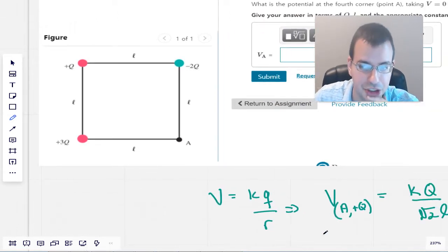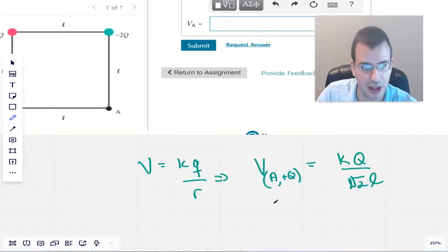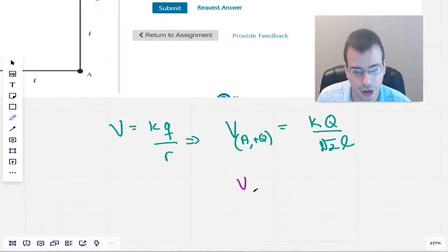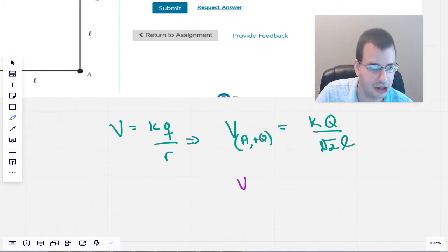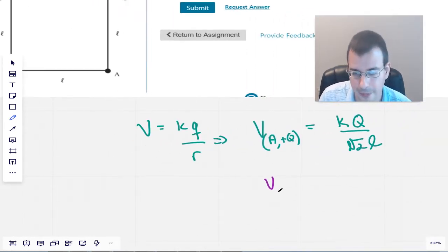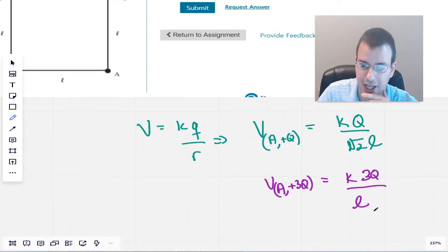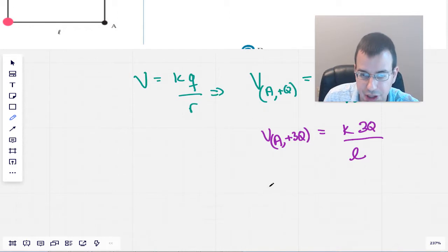So that's where that square root of 2L comes in. And it's easy to kind of get lost in that, that actual plus Q there is a little bit further away than the other two points. So then we have voltage at A due to plus 3Q. And that will be K 3Q over L, because it's only an L distance away.